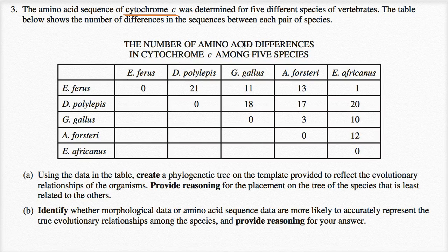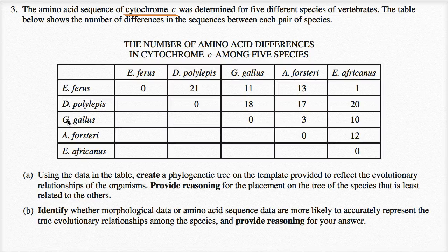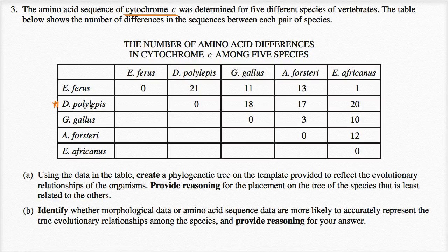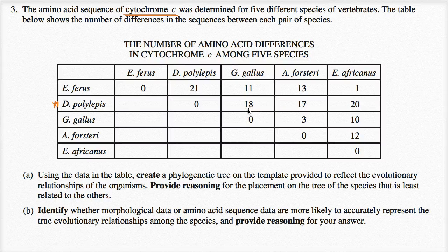So even though you have the same or similar protein, we call them all cytochrome C, the sequence might be slightly different when you go from one species of vertebrate to another. And the way to read this is for each of these rows, you could say, all right, this row describes D. polylepis, and we could see the number of sequence differences between D. polylepis and G. gallus. There's 18 differences. There's clearly going to be zero differences between that species and itself. All right, and I'll just answer their question.